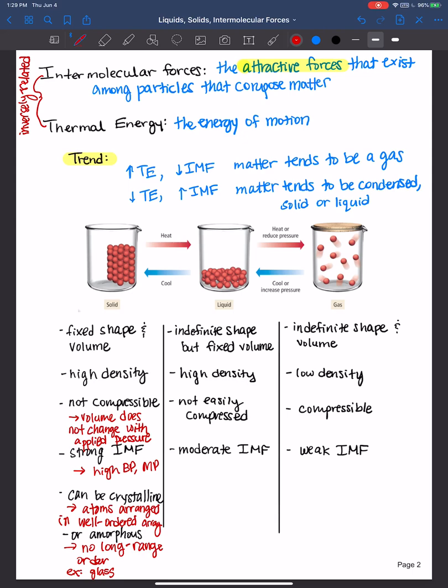Solids can also be amorphous, which means they have no long-range order. An example of that is like glass. If you were to go to a historical building with glass window panes that are years and years old, and if you measured the thickness at the bottom of the glass pane versus the thickness at the top, you would find that it's thicker at the bottom due to gravity. Because it's an amorphous solid. So, slowly over time, that glass has trickled down closer to the bottom there.